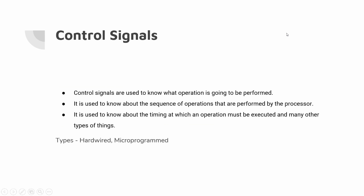Hi friends. In this video we are going to talk about control signals - how do we design a control unit? There are two types of control unit: hardwired and microprogram. In this video, we will talk about hardwired.